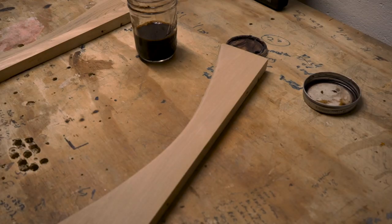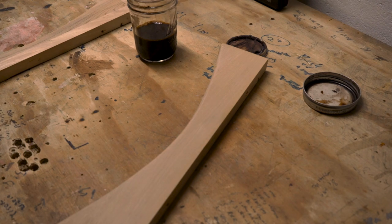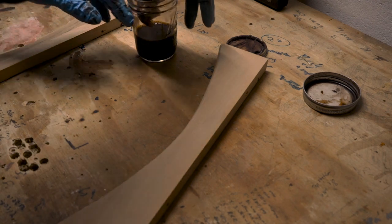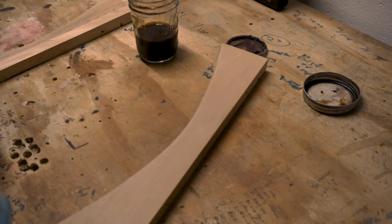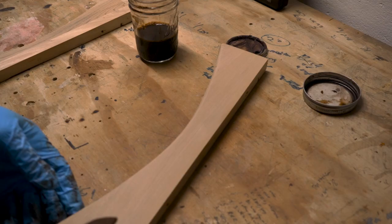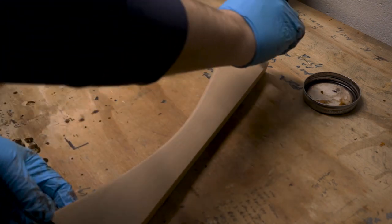The stain that I went with was a dye stain. I've used this in a few of my previous videos recently. I made this just by mixing some TransTint medium brown dye with water. And that was it. I just wiped it on and let it dry.